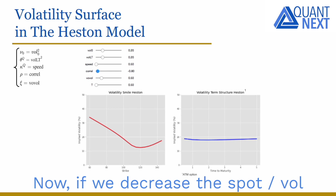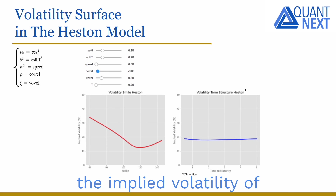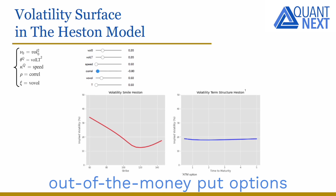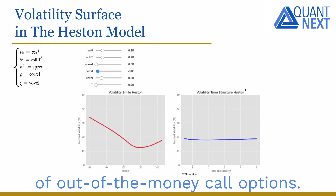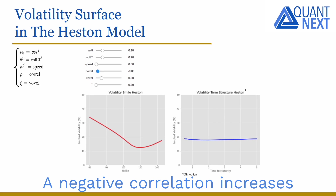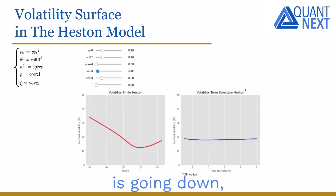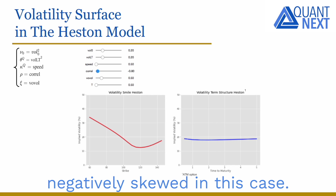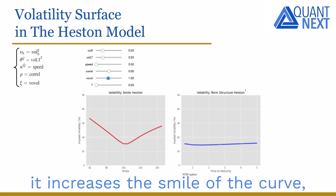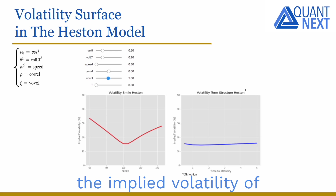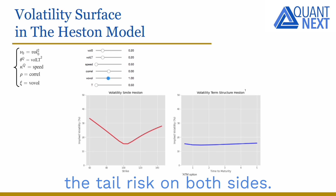If we decrease the spot-vol correlation into negative territory, the volatility smile becomes asymmetric. The implied volatility of out-of-the-money put options on the downside increases and is higher than the implied volatility of out-of-the-money call options. A negative correlation increases tail risk on the downside with higher fluctuations when the underlying asset is going down — the volatility curve is negatively skewed. If we increase the vol-of-vol, it increases the smile: the implied volatility of both out-of-the-money puts and calls increases as higher vol-of-vol raises tail risk on both sides.